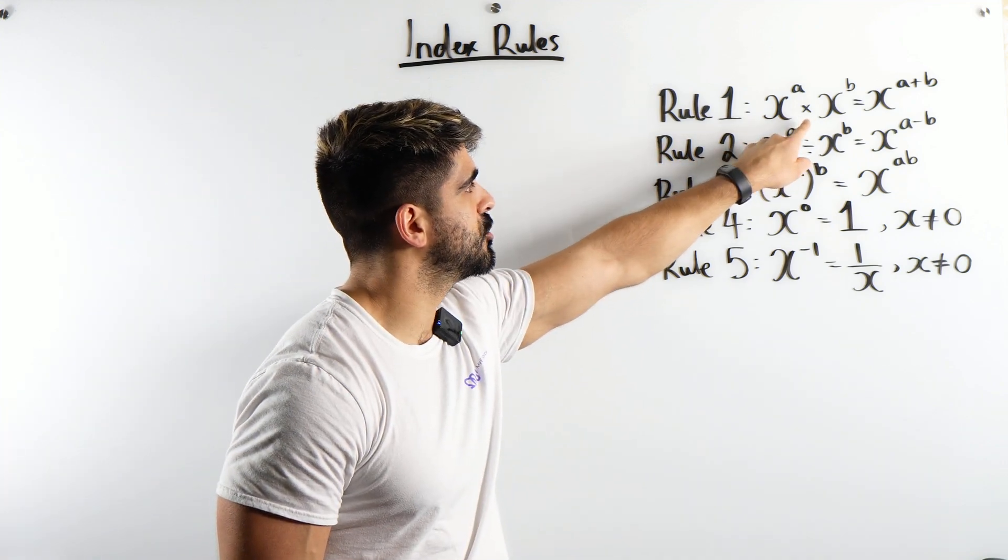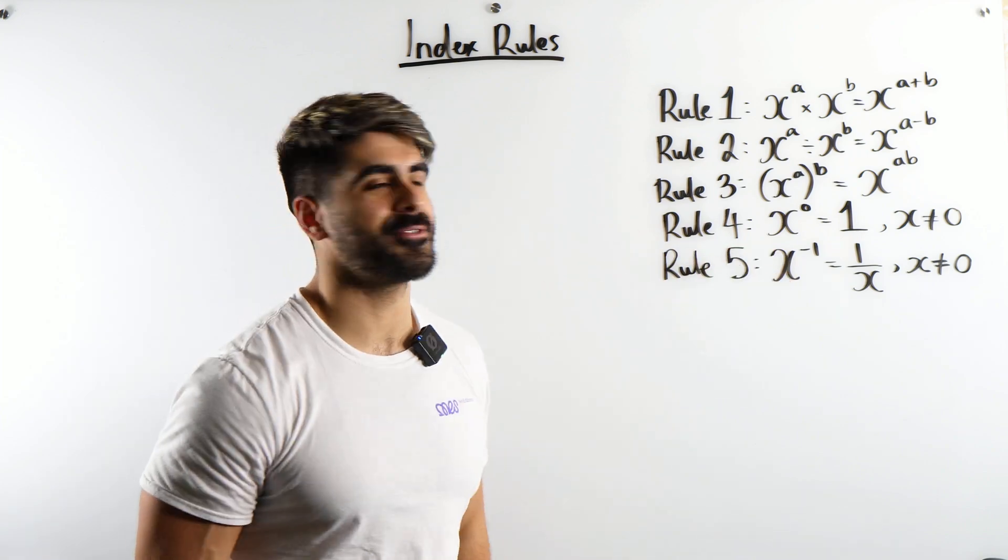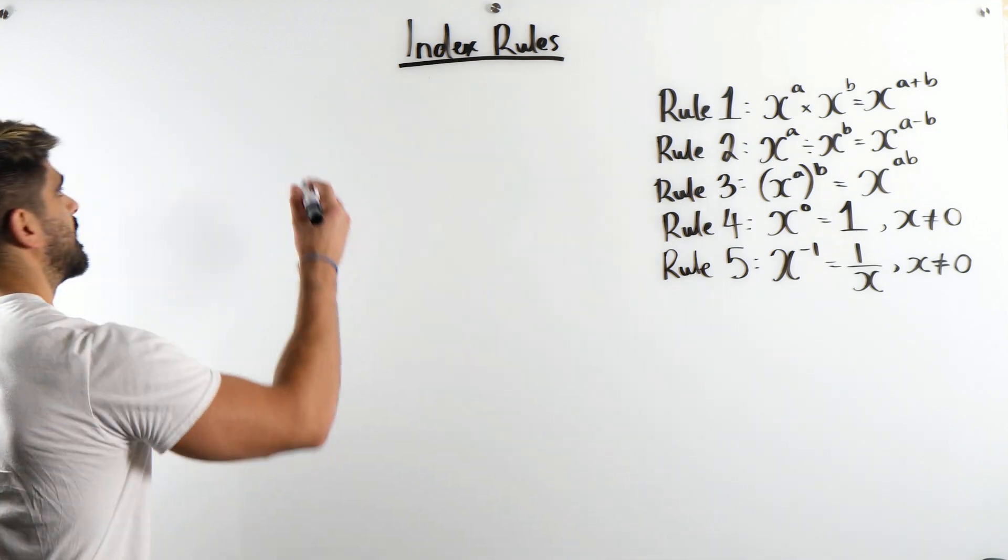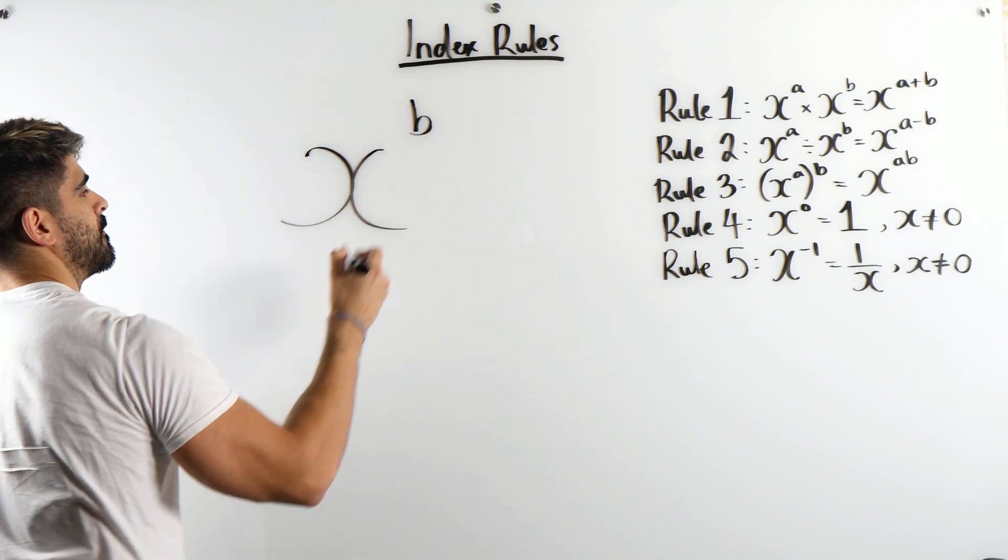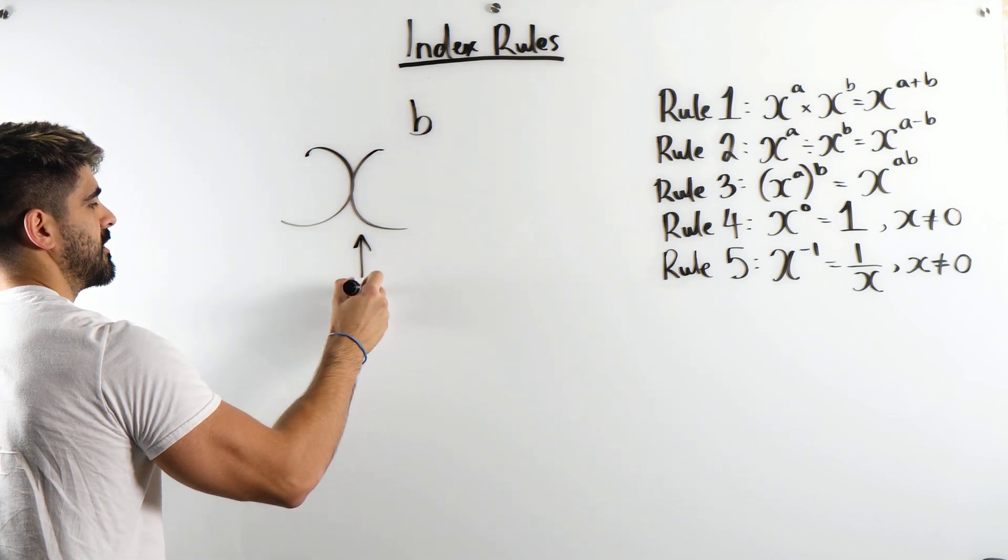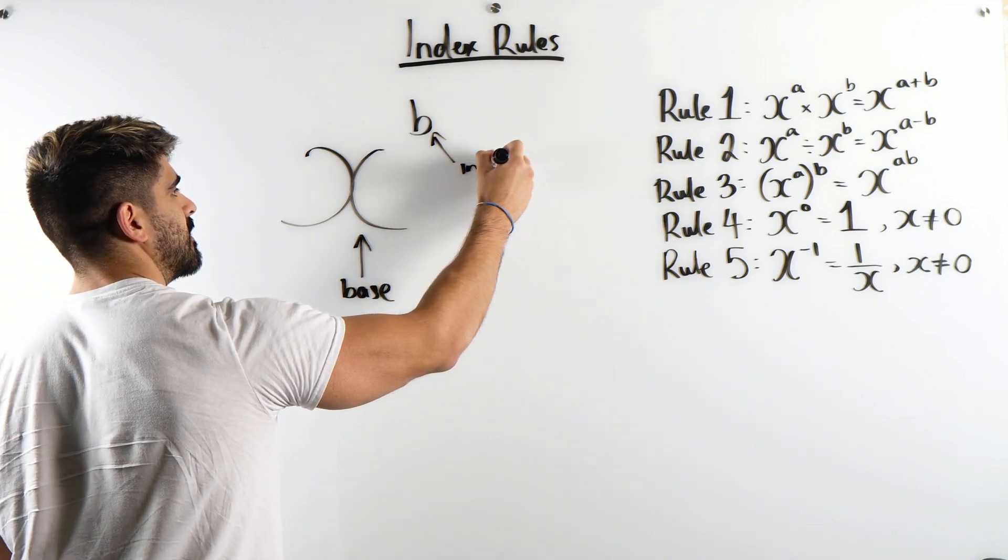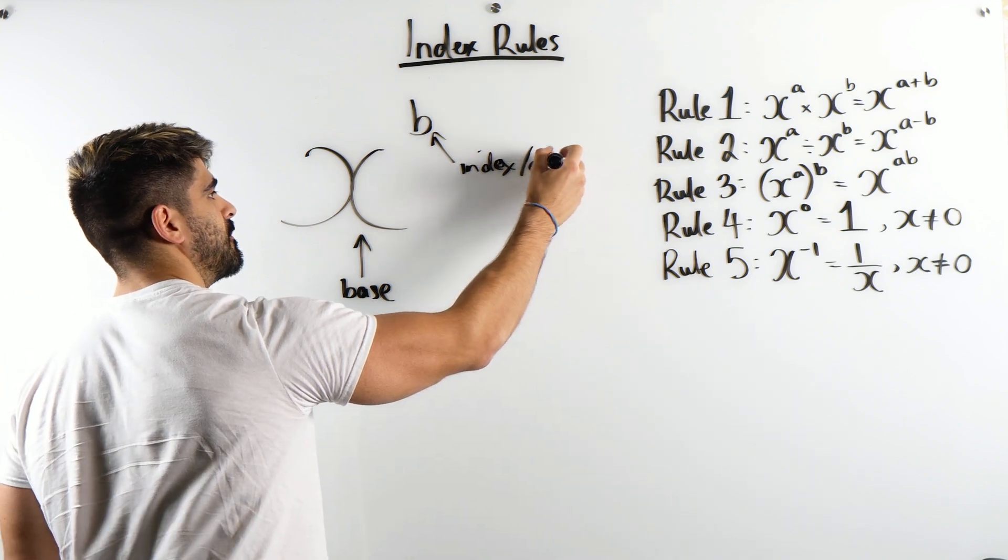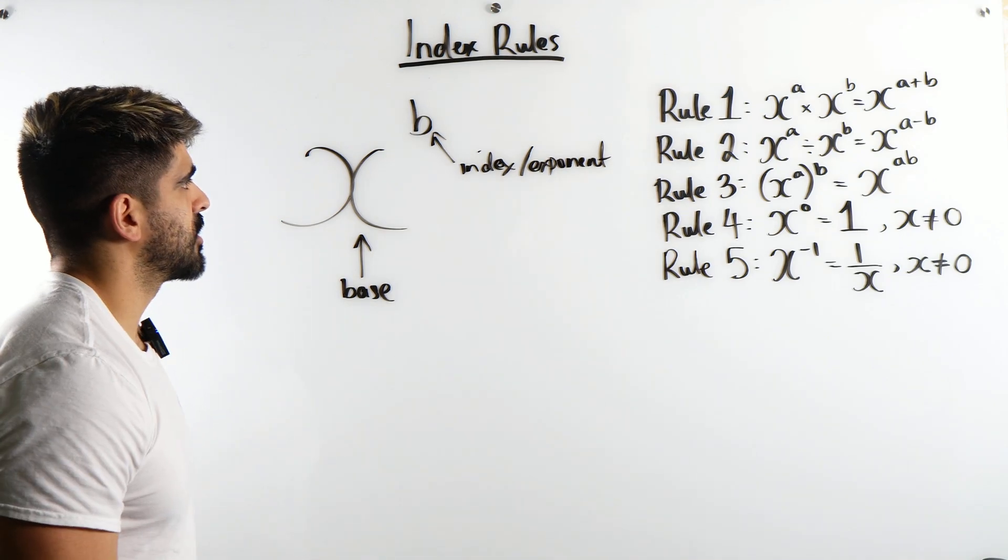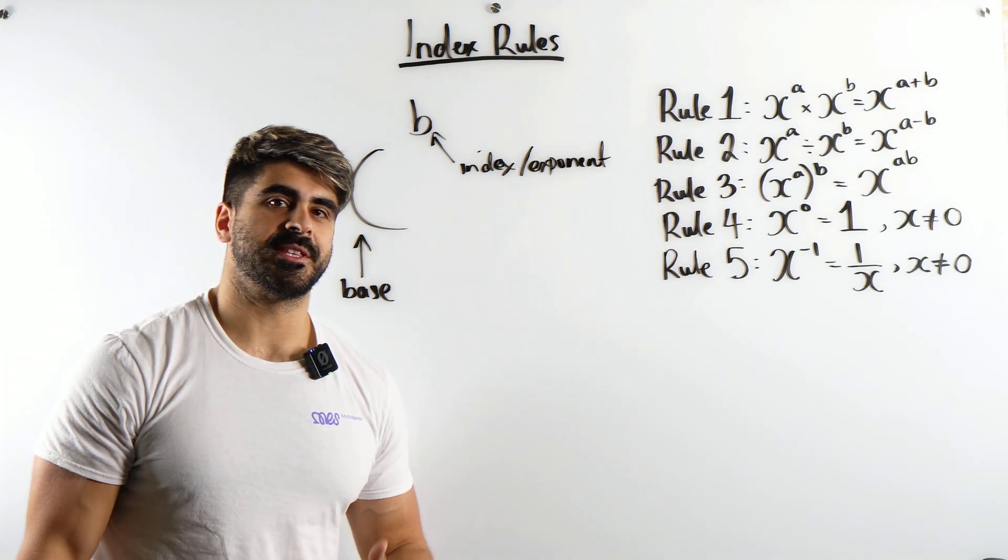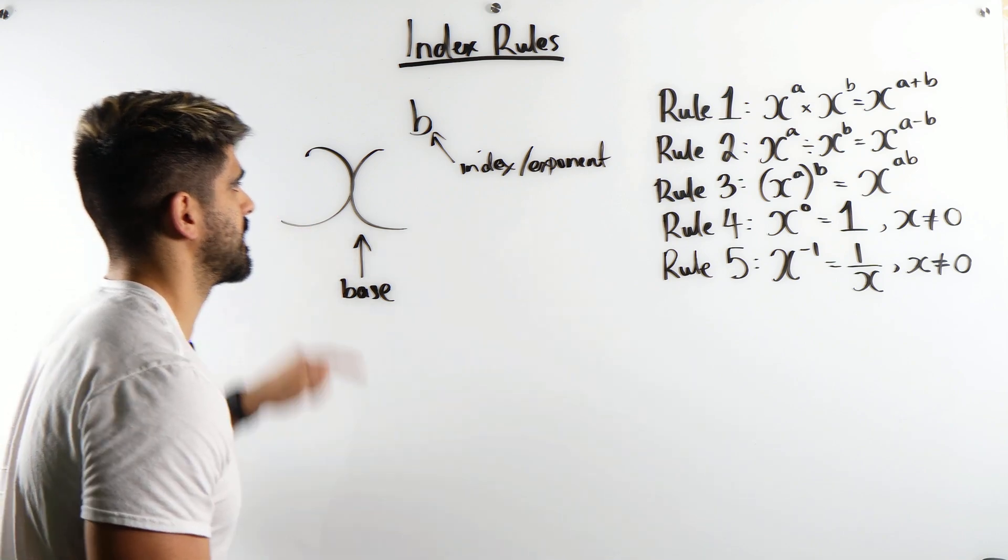If you multiply two numbers with the same base, you add the powers. So let's recap here. If you have a number like this with a power, this is known as the base and this is known as the index or the exponent, depending on where you are. So when I say I'm multiplying two numbers with the same base, I'm talking about this number. They always have to be the same.